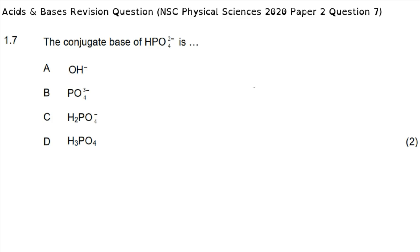Question 1.7: what is the conjugate base of HPO₄²⁻? A conjugate acid-base pair differs by the gain or loss of a single proton. Since we are asked for the conjugate base, the given substance is the acid — a proton donor. HPO₄²⁻ has only one proton to give away, leaving PO₄³⁻. The correct answer is option B.